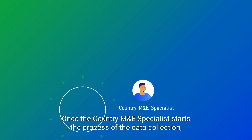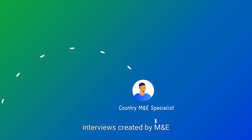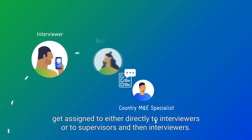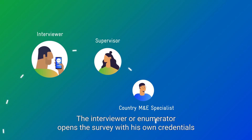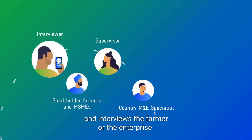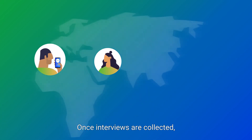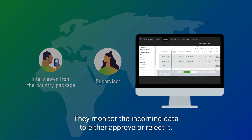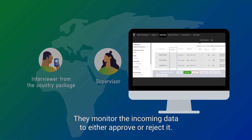Once the country M&E specialist starts the process of data collection, interviews created by M&E get assigned either directly to interviewers or to supervisors and then interviewers. The interviewer or enumerator opens the survey with their own credentials and interviews the farmer or enterprise. Once interviews are collected, the interviewer sends them for review to a supervisor, who monitors the incoming data to either approve or reject it.